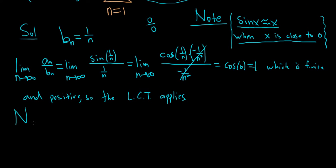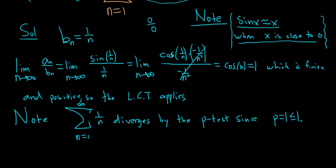So note that the sum of the B's, so if we look at the sum from 1 to infinity of 1 over n, this is a divergent P series. So this diverges by the P test since P equals 1, which is less than or equal to 1. So therefore,